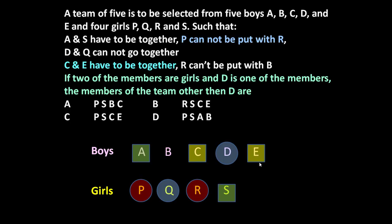Next, C and E have to be together — represented by a square. R and B cannot go together — since the circle symbol is already used, I will put a cross here. R and B cannot go together.